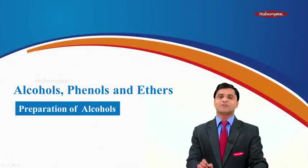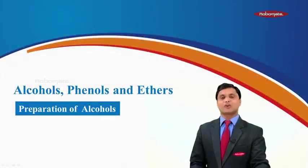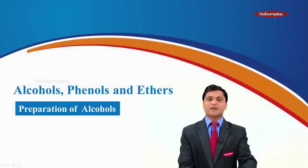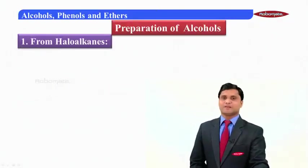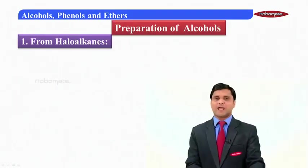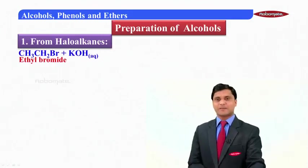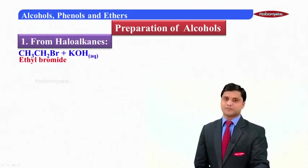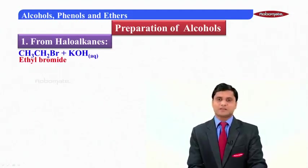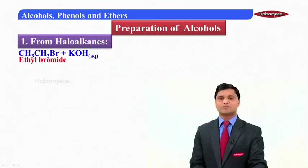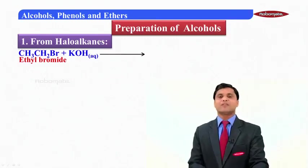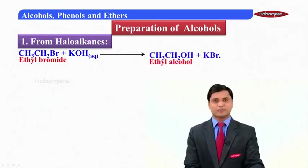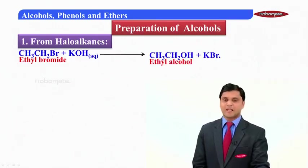Hello students, welcome to the chapter Alcohols, Phenols and Ethers. In this module we'll discuss preparation of alcohols. Alcohols can be prepared from haloalkanes. For example, ethyl bromide reacts with aqueous KOH. Aqueous KOH contains nucleophile OH⁻, which brings about a nucleophilic substitution reaction. The Br atom is replaced by the OH group, giving us ethyl alcohol.